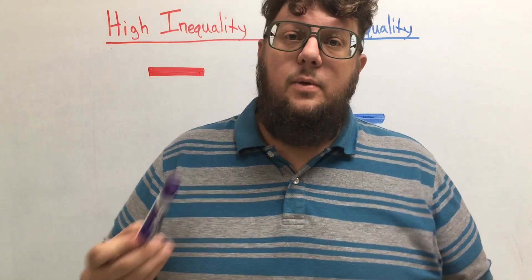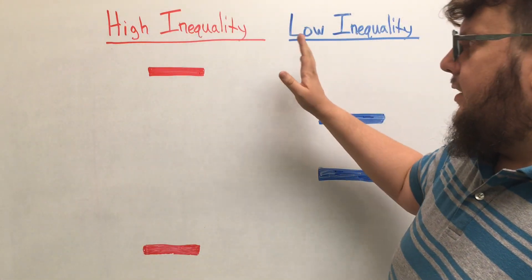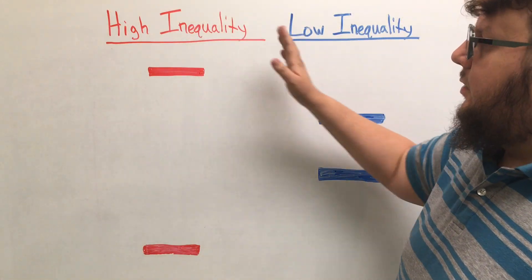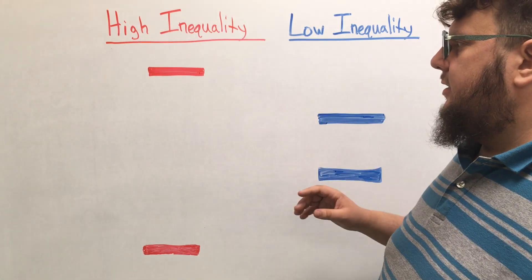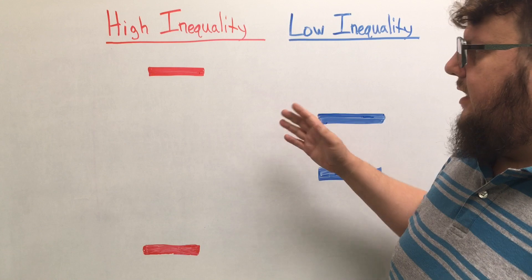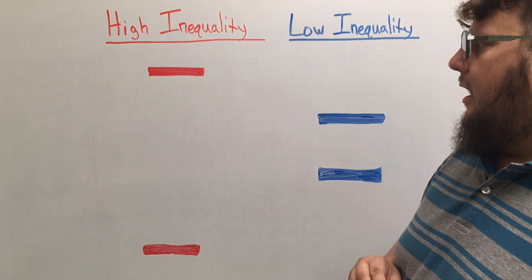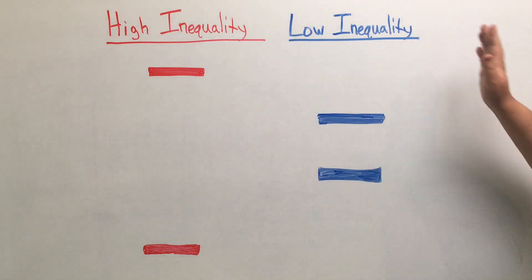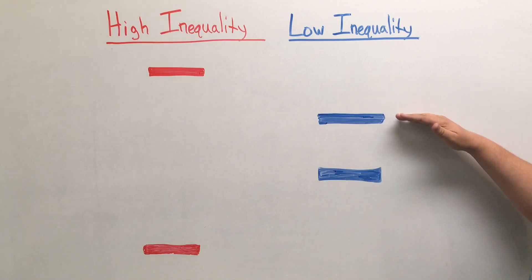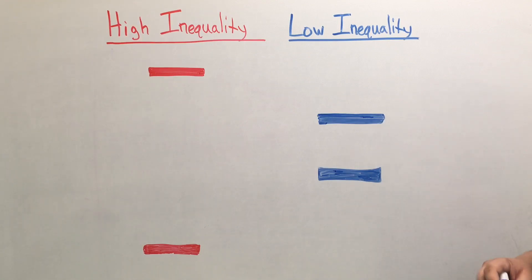So here on the board, I have in red on the left side high inequality nations represented by two bars that are spread apart because there's a high degree of inequality between the very top echelon and the very bottom earners. On the right side here in blue, I have a representation of a low inequality nation where the top echelon is much closer comparatively to the bottom echelon.